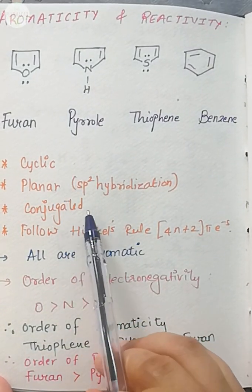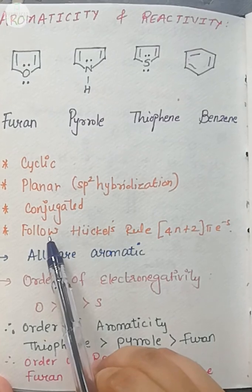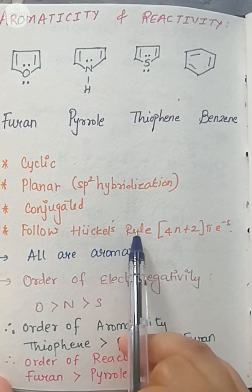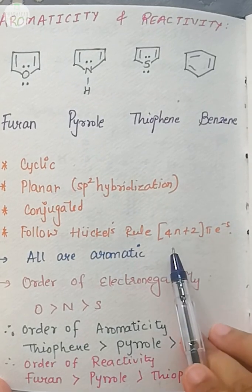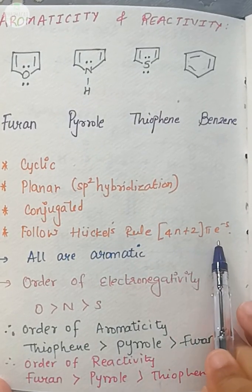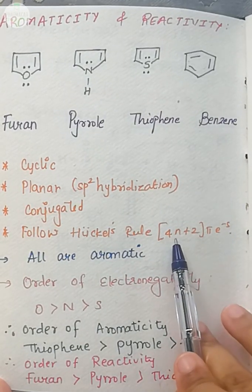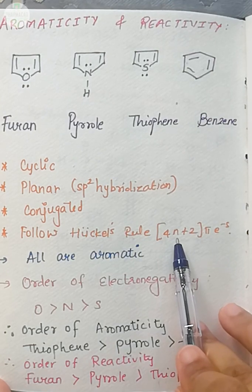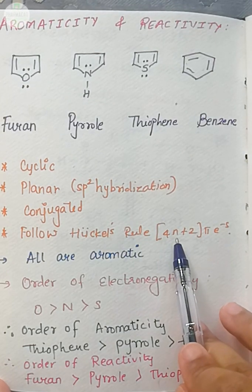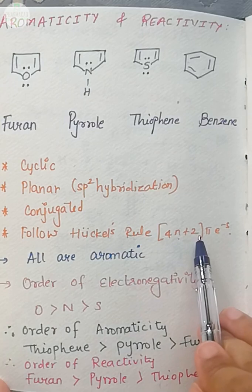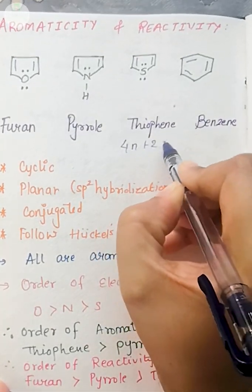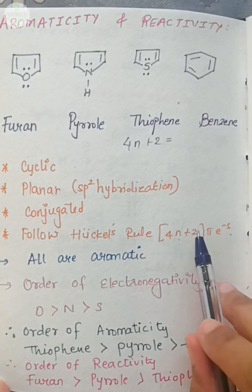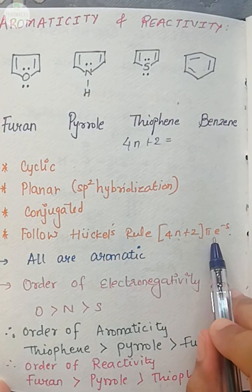So if it is a cyclic, planar, or conjugated system, it should follow Hückel's rule. And this rule, what is the rule? The molecule should have 4n plus 2 pi electrons. Now if I calculate 4n plus 2 for benzene,